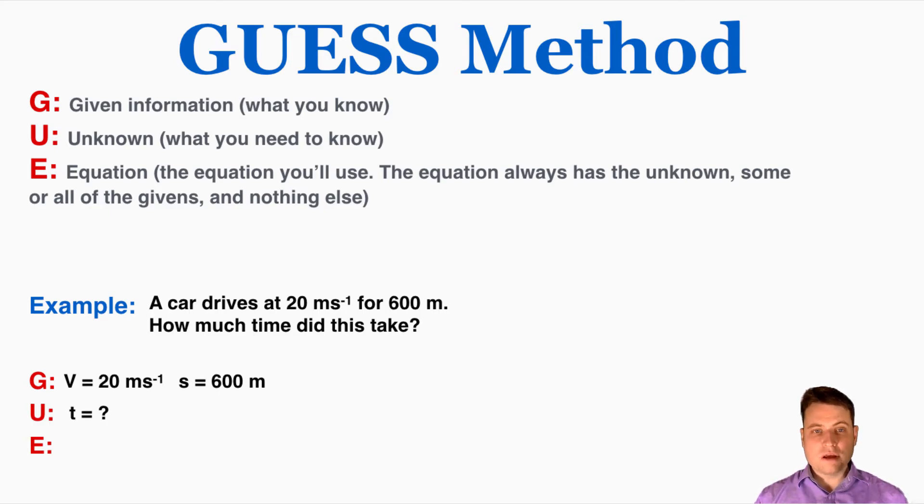Okay this is the most important step, identifying the equation. The equation always has the unknown, some or all of the givens, and nothing else. I find that when students walk into physics they sometimes assume that physicists have some really in-depth understanding of every single physics equation, and can understand all the implications of an equation just by looking at it. And that's not exactly true. A lot of times when we're doing problem-solving we're just pulling together things that we know, finding equations that connect them, and then moving on without thinking too much about what the equation actually implies. And that's what's going to happen in the GUESS method too.